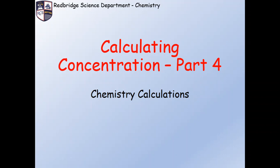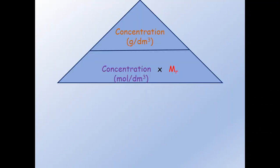In this video we are going to look at how we can convert between the concentration in gram per decimeter cube and the concentration in mole per decimeter cube. To do this we are going to use a formula triangle where we have the concentration in gram per decimeter cube at the top, then a division line, and at the bottom concentration in mole per decimeter cube times Mr. Mr is the relative formula mass.